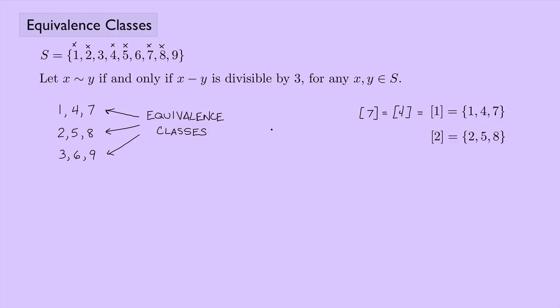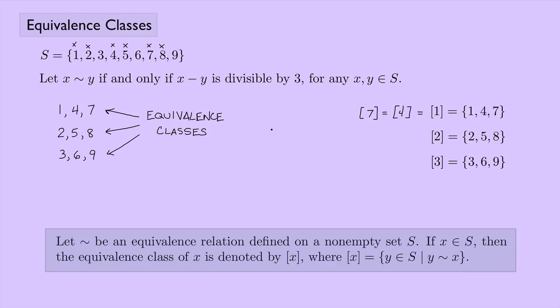The same notation applies to the other equivalence classes. In general, if we have an equivalence relation defined on a non-empty set S, and x is an element of S, then the equivalence class of x, denoted [x], is the set of all elements in S that are equivalent to x.